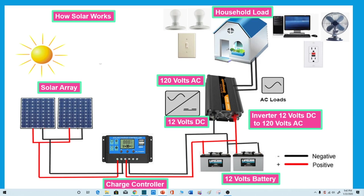A battery is a device that reserves energy for later consumption, charged by a connected solar system. This stored electricity is consumed after sundown to power our homes.